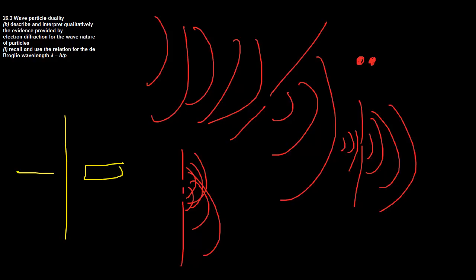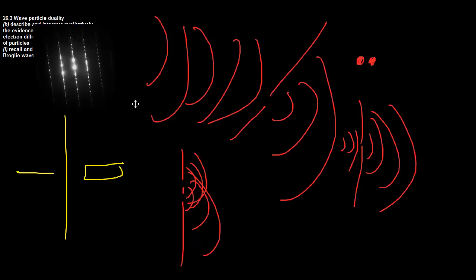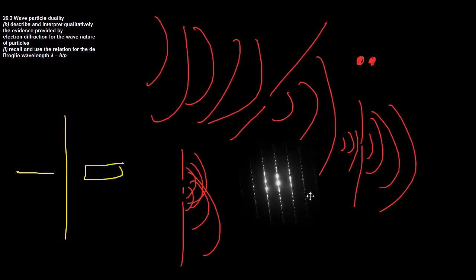There are various diffraction patterns depending on what you're diffracting through. Here's one example: this is a beam of electrons being picked up as a diffraction pattern, and this proves that electrons also have wave-like properties.